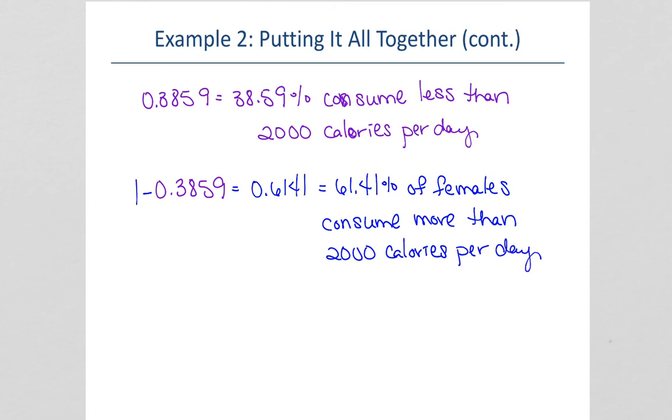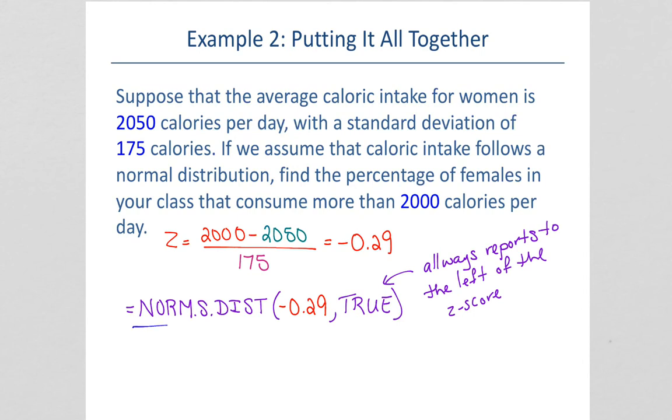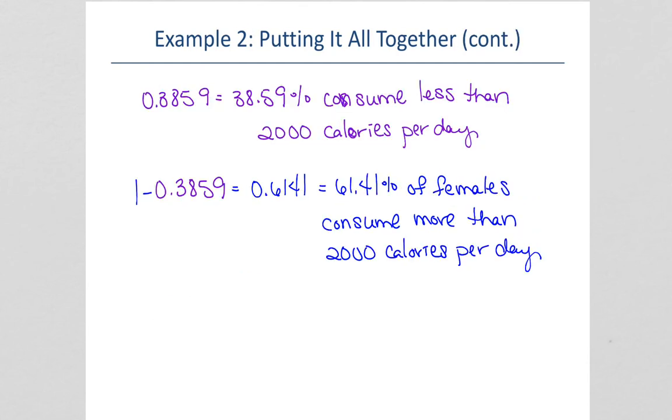Here's the process again. Put this in Excel. After you've found the z-score, put that in Excel with your z-score. Realize that that's telling you the percent less than.